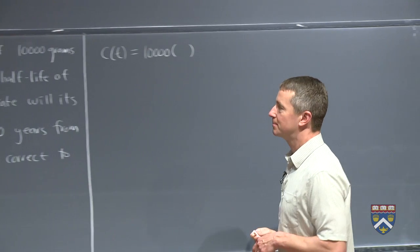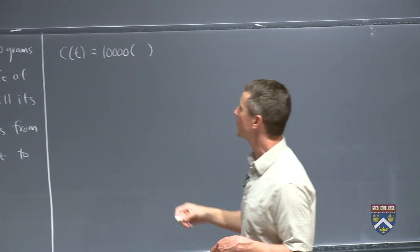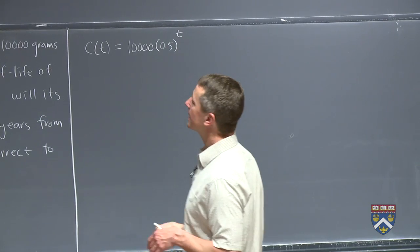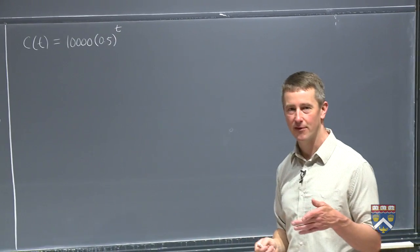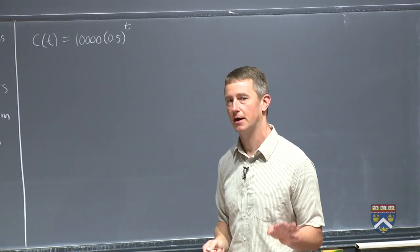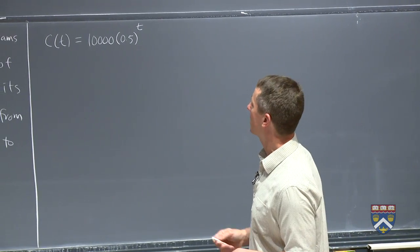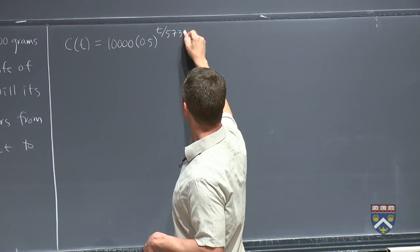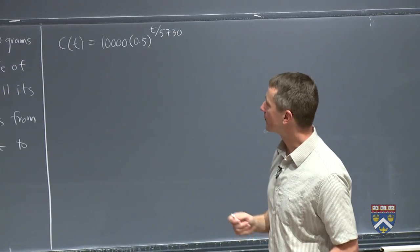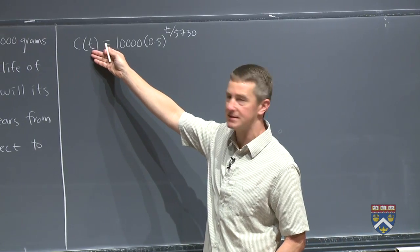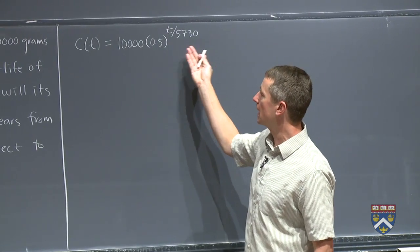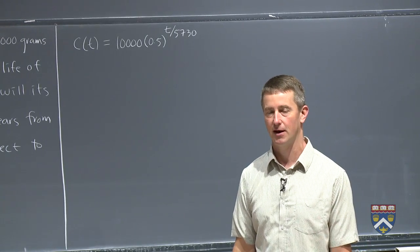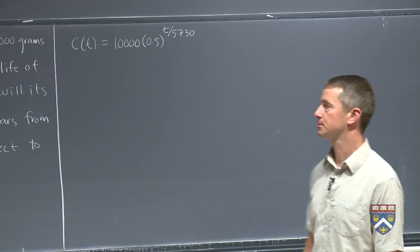And then we're keeping half of it, so we're multiplying by 0.5. And if I write it to the t, it's being cut in half every year. That's much too fast, right? So we talked the first week about how to fix that. We slow it down by writing t over 5730. And then we can confirm if we plug in C(5730), the exponent becomes 1. We get 10,000 times 0.5, 5,000, so we've lost half of it in the first 5730 years, which is exactly how it's supposed to work.